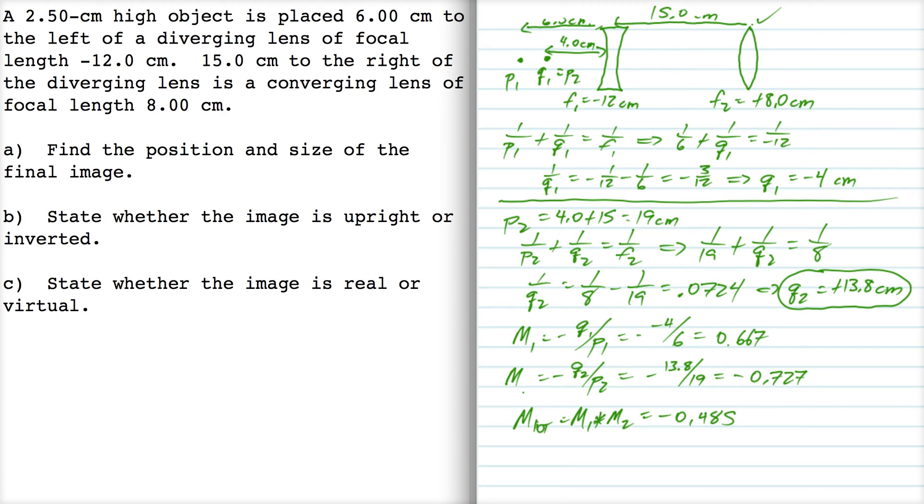Now, the object is 2.5 cm high, so the height of the image is equal to the magnification multiplied by that 2.5 cm. So it's 1.21 cm high. So there's the location and the size of the final image.